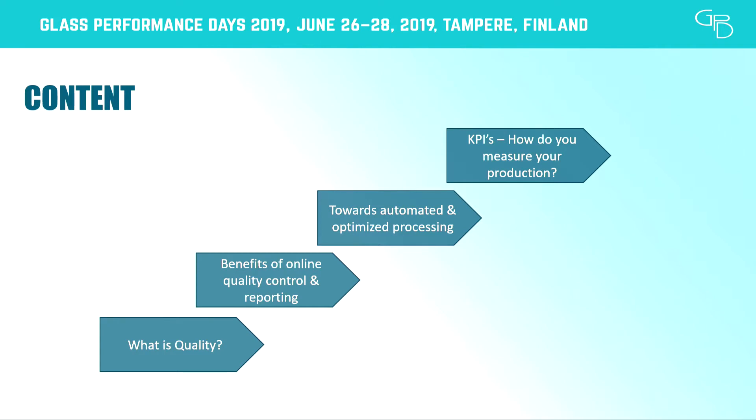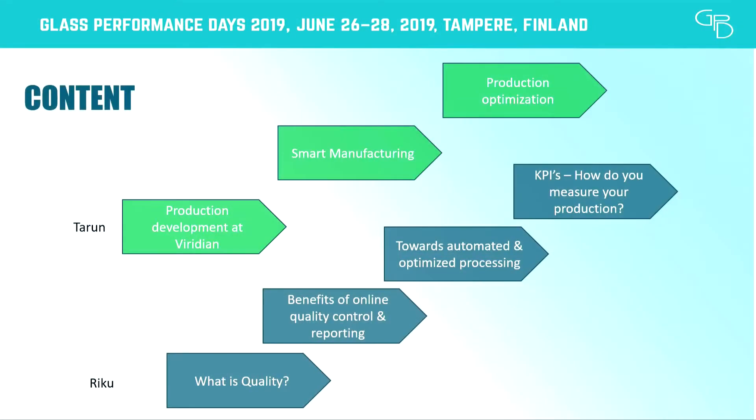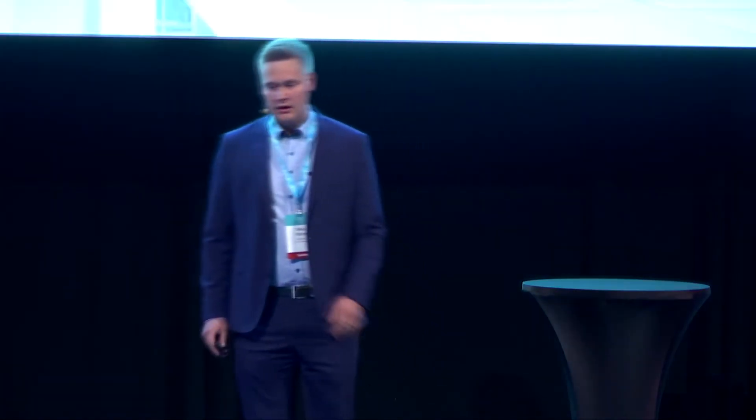After that, we'll move toward how we want to progress toward automated and optimized processing. Before that, a few words about what KPIs are out there and how you could measure your production. Tarun will then tell us about production development at Viridian — what smart manufacturing tools they have in place, what KPIs and tools they use.